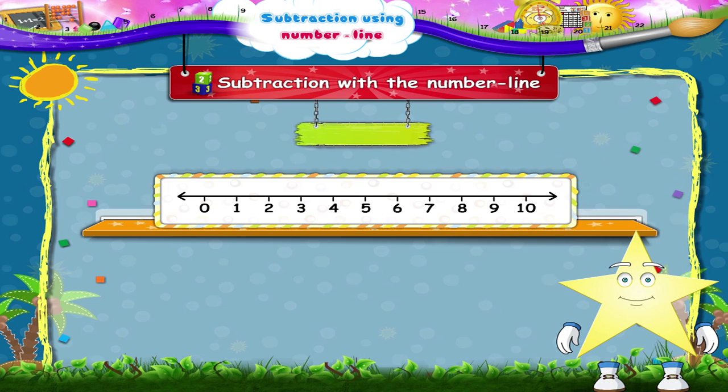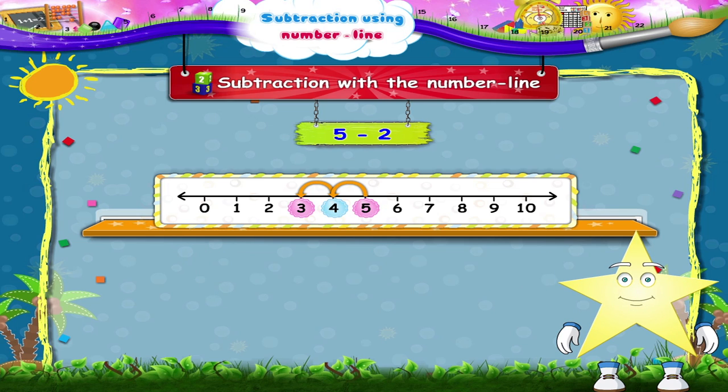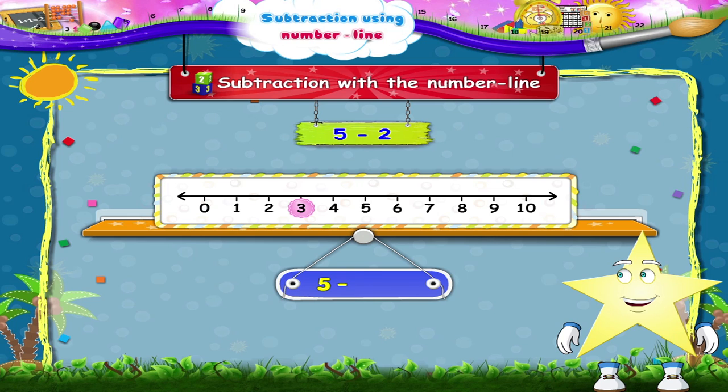Let us take five minus two. Look at the number line and start from five. To subtract two, we move two places to the left. One, two, we reach the number three. So five minus two is three.